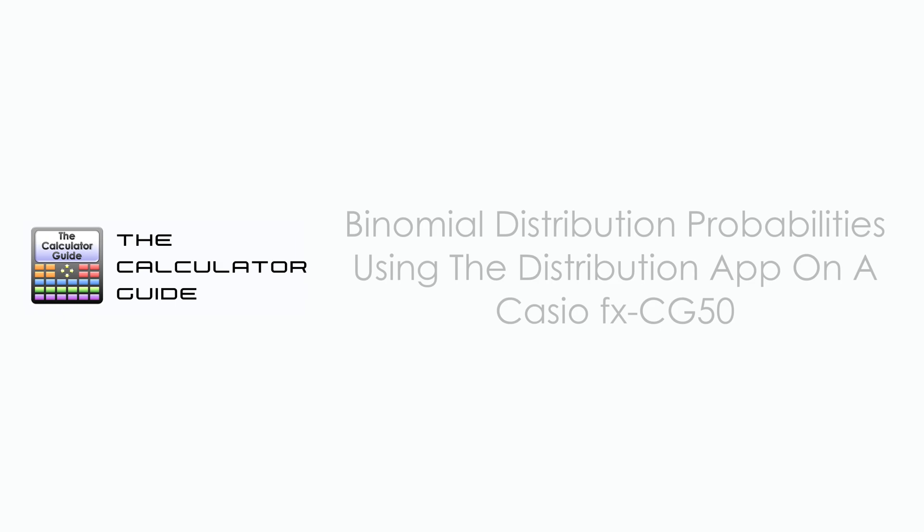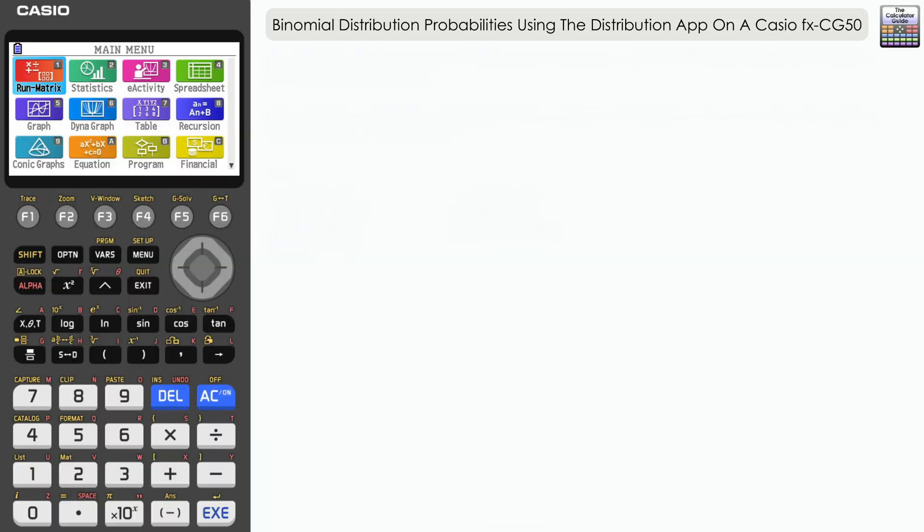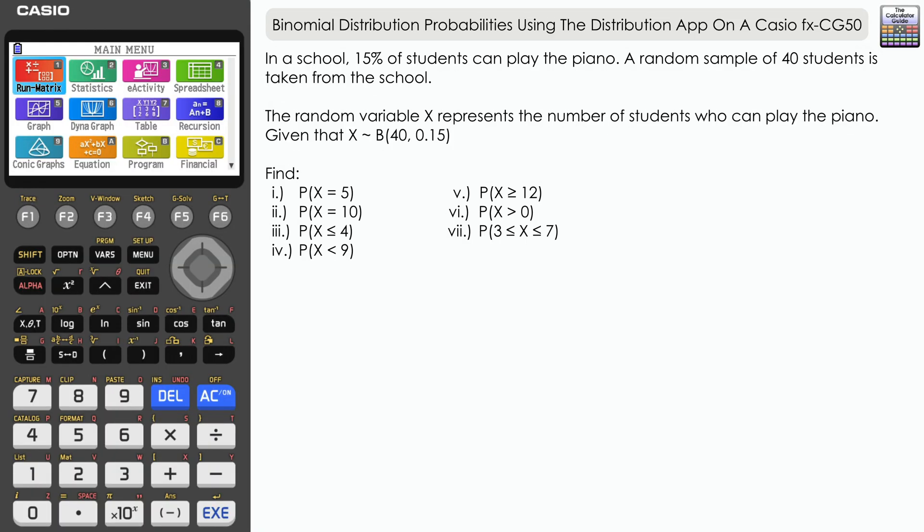Hello and welcome to the calculator guide video on binomial distribution probabilities using the distribution app on a Casio FX-CG50. Let's take a look at the question. In a school, 15% of students can play the piano. A random sample of 40 students is taken from the school.